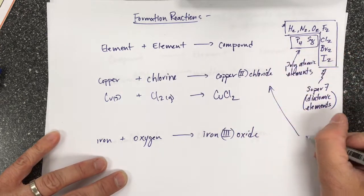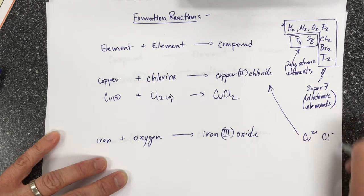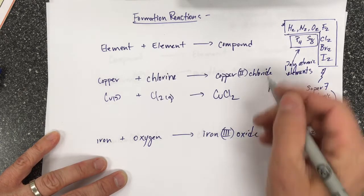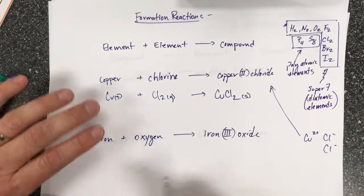Because this is an ionic compound, it's going to be made from copper 2+ and chloride. So it's got two chlorides and one Cu2+. It'll make a solid because it's an ionic compound.